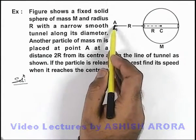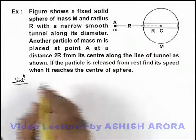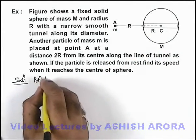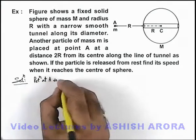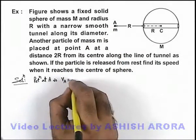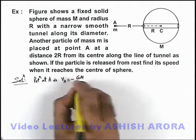As the particle is moving from point A to C, first let us calculate gravitational potential at A. Due to the sphere, potential at A as it is an outer point, we can write V_A is minus GM by 2R.